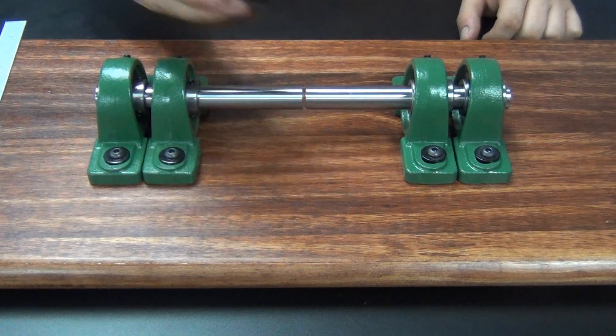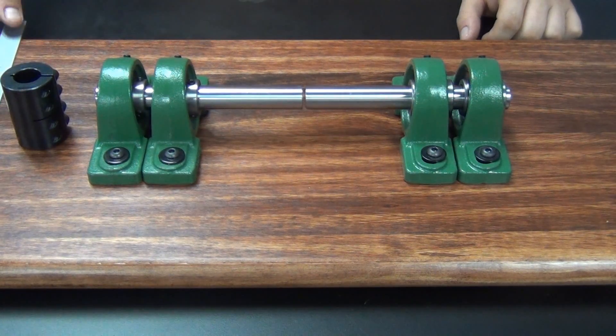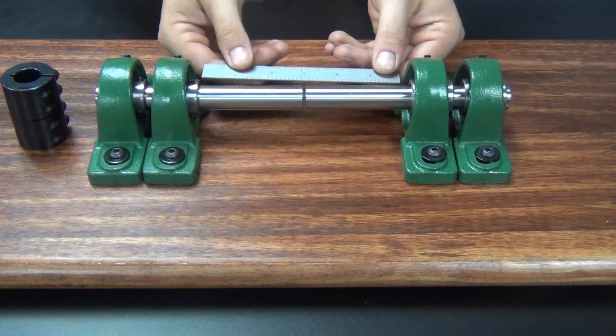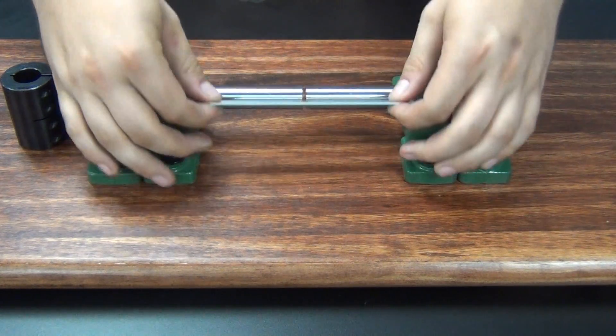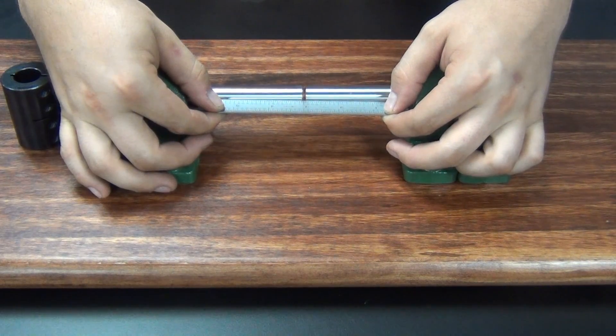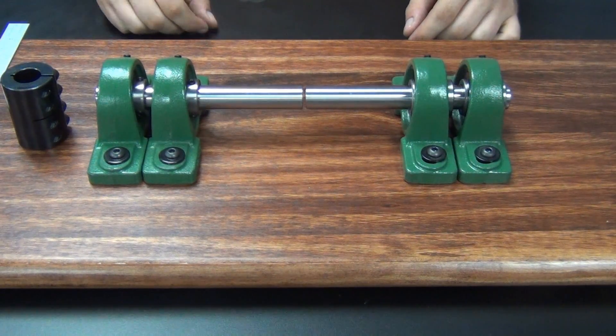We will begin with the one piece rigid coupling. The first step in the installation process is to align the shafts that are being connected to remove misalignment. The system needs to be aligned because rigid couplings will transmit forces generated by misalignment to other components causing them to fail prematurely.